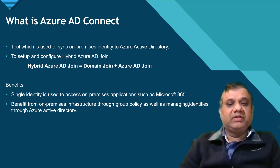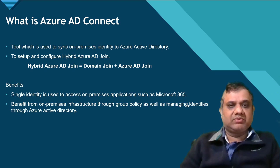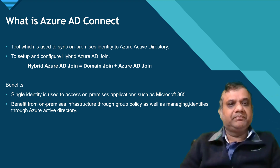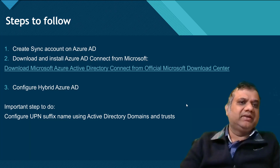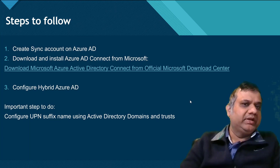The benefit of the Hybrid Azure AD Join configuration is that you're going to use infrastructure from both on-premises and the cloud. You can keep using your group policies, and at the same time control devices through Azure Active Directory or via Intune once they're enrolled. Let's see the steps we need to follow to do all this.